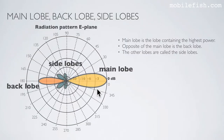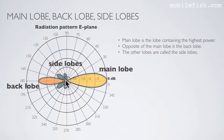In radiation patterns you can see shapes called lobes. The main lobe is the lobe containing the highest power. Opposite the main lobe is the back lobe. The other lobes are called side lobes.